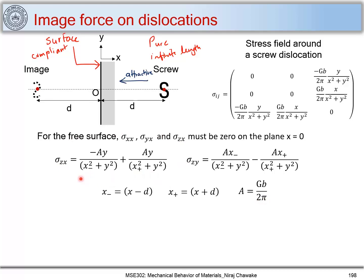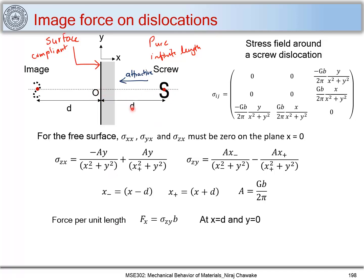The stress field is the stress field of the image dislocation minus the stress field of the real dislocation. Similarly we can find σ_zy. Now let's consider at point x = d what is the force per unit length on the screw dislocation from the surface. We can find it out using the term f_x = σ_zy · b, which is the force acting on the dislocation line because of the presence of the image dislocation — and that we call the image force.